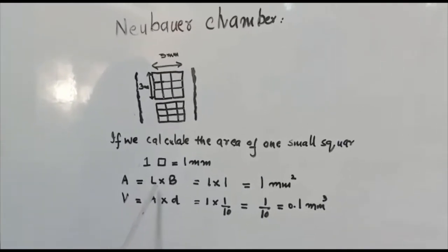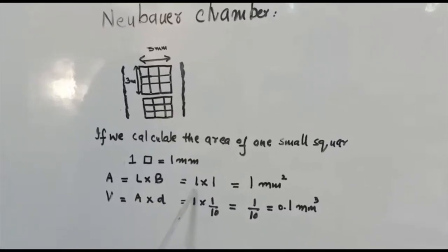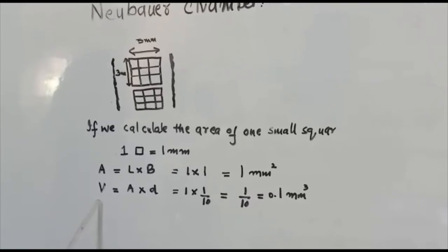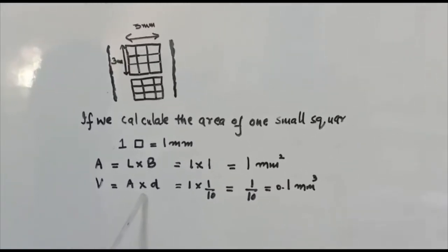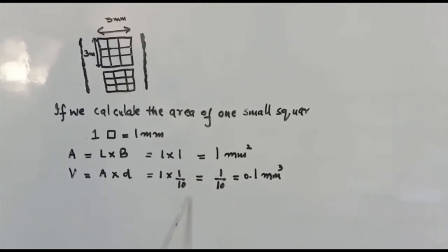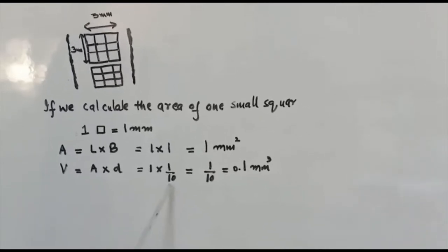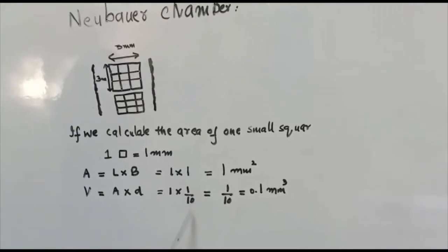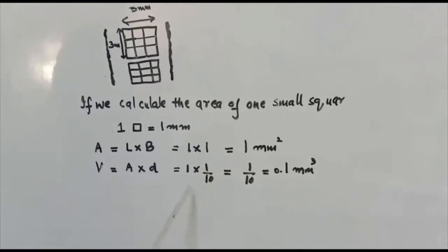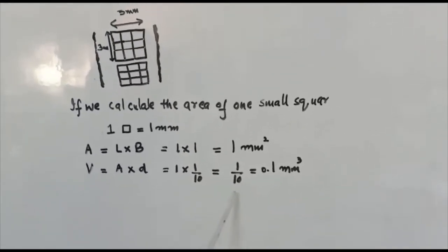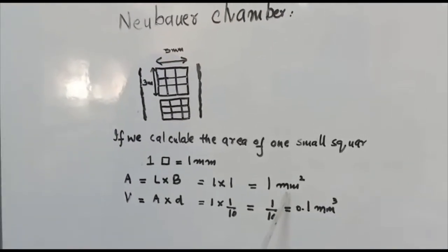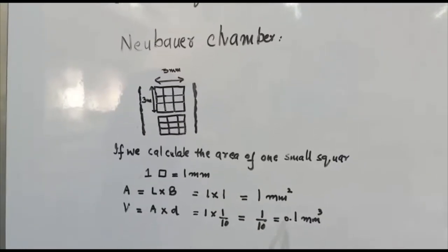The formula for area is length × breadth: 1 mm × 1 mm = 1 mm². For volume, the formula is area × depth. The area is 1 mm² and the depth is the standard depth of the Neubauer chamber, which is 1/10 mm. So the volume = 1 × 1/10 = 0.1 cubic millimeter. The area of 1 small square is 1 mm² and the volume of 1 small square is 0.1 cubic millimeter.